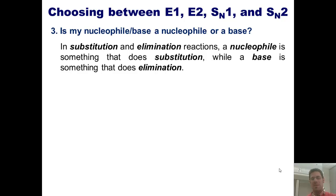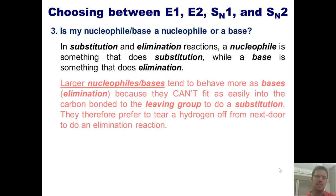So how in the world do we make the distinction between a nucleophile or a base? The answer is size. Larger nucleophile slash bases tend to behave more as bases, that is, they tend to favor elimination, because they can't fit as easily into the carbon bonded to the leaving group to do a substitution. They therefore prefer to tear hydrogen off from next door to do an elimination.